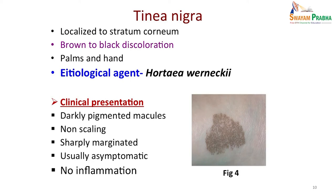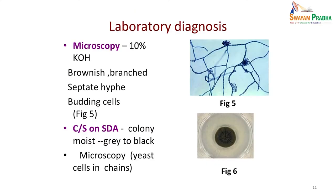Not just tinea versicolor — there are other kinds of superficial skin infections also which you might come across. Another one is tinea nigra. It is again localized to the stratum corneum, but here you will get brown to black discoloration patches, usually seen in palms and hands and not on the back or other areas. The etiological agent in this case is Cladosporium werneckii, which is a deeply pigmented fungus. Clinically the patient presents with dark pigmented macules that are non-scaling, sharply marginated, and asymptomatic — no inflammation and no itching.